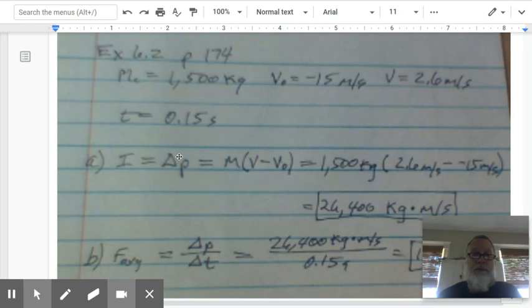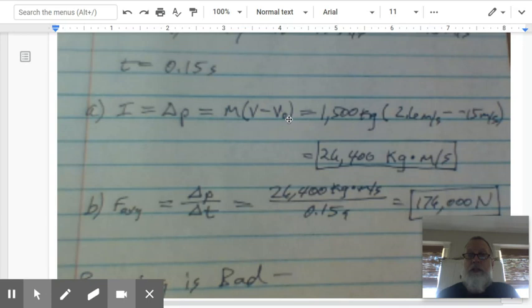Part A, we're supposed to find the impulse. Impulse equals change in momentum, so it's the mass of the car times the change in velocity. The mass is 1,500 kilograms. The final velocity is 2.6 meters per second minus the initial velocity of negative 15 meters per second. So we end up with 1,500 kilograms times 17.6 meters per second, and we end up with 26,400 kilogram meters per second for our impulse.